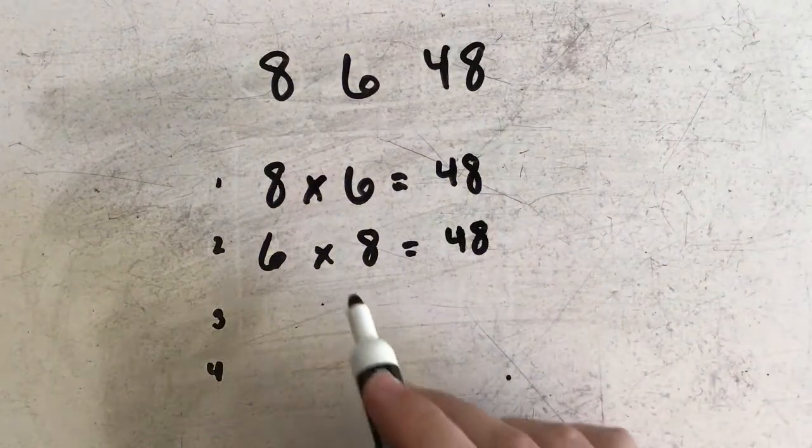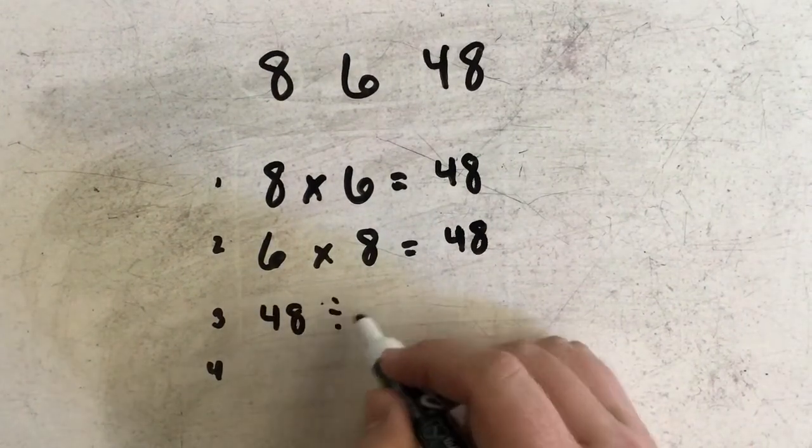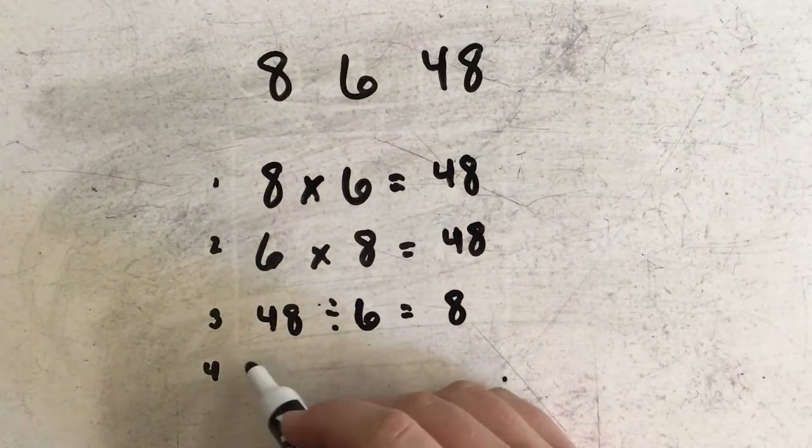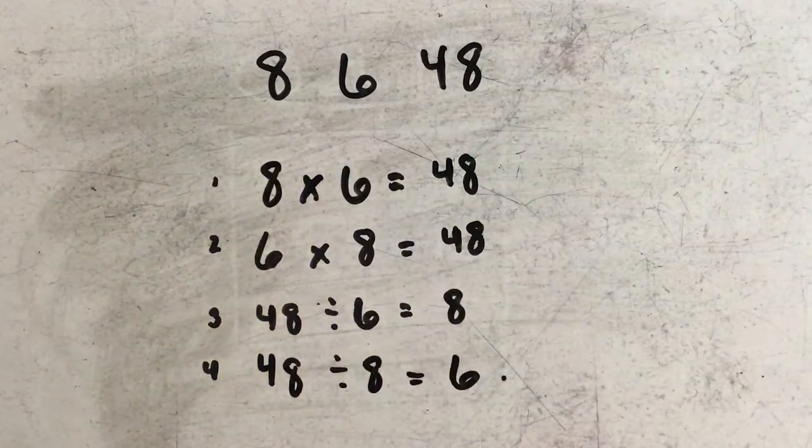I could also bring in division as well with this. So I would say that 48 divided by 6 is equal to 8. And 48 divided by 8 is equal to 6.